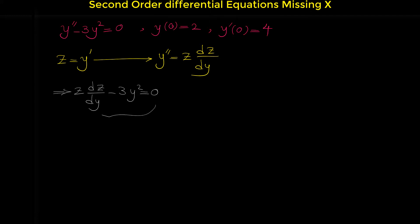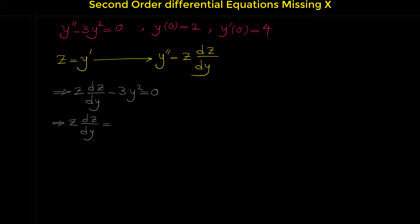Simply, we can write this new differential equation as a separable differential equation. If we bring 3y squared to the other side, we have z dz over dy equals 3y squared. And from this, z dz equals 3y squared dy. Now that z and y are separated, integrating both sides, we can find z.